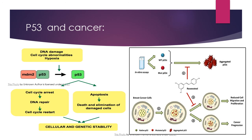In breast cancer, normal p53 becomes mutated and aggregated into mutant p53. This mutated p53 reduces cell migration and proliferation control, and leads to cancer progression.